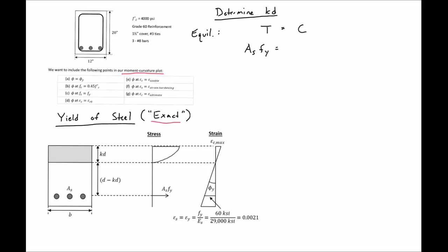So we'll start off with tension equal to compression and we know that our tension force is As times Fy and our compression force is our base width times our stress. So our stress in this case is the integral of zero to KD of F of C which is a function of our strain and this is integrated over dy.